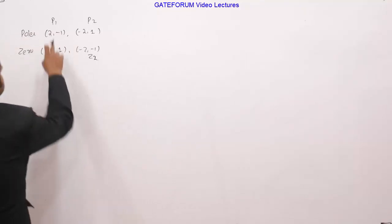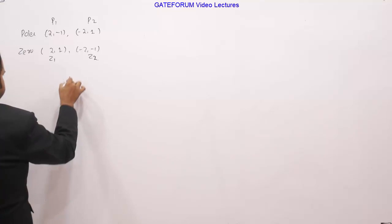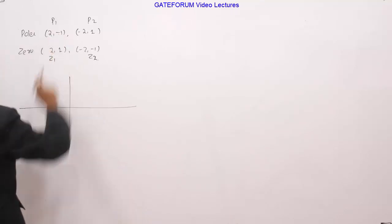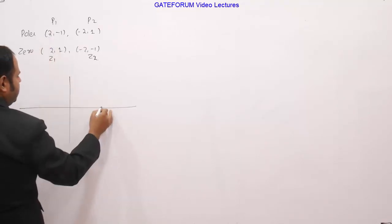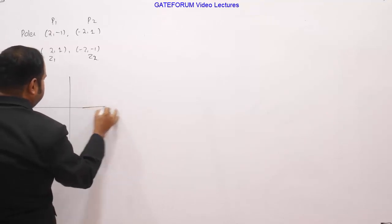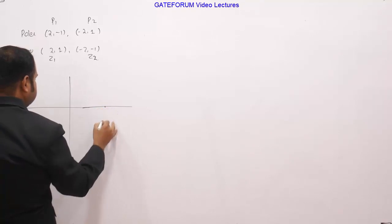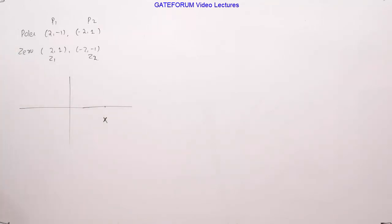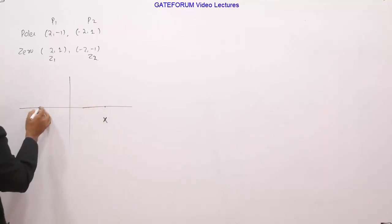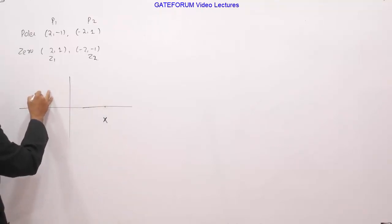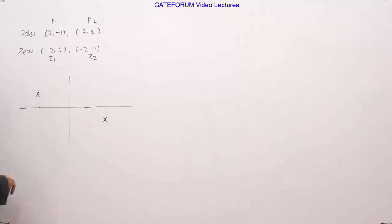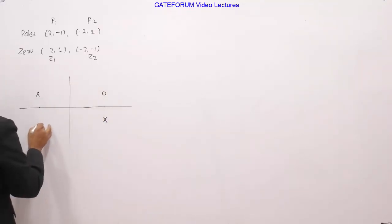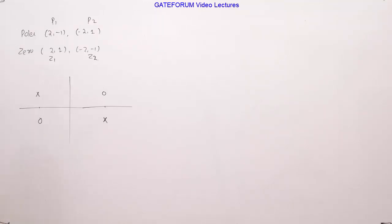The pole locations are p1 and p2, and zero locations are z1 and z2. Plotting the pole-zero diagram on the S-plane: p1 is at real part 2, imaginary part minus 1, so it lies in the right half. p2 is at minus 2, plus 1. For zeros, z1 is at 2, plus 1, and z2 is at minus 2, minus 1. This gives us the complete pole-zero plot of the given system.